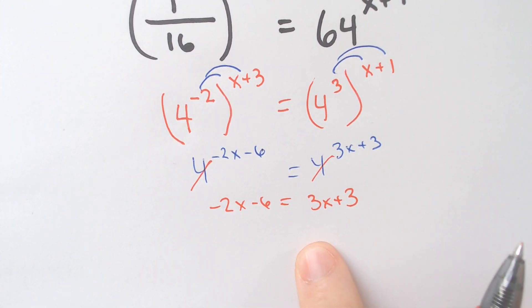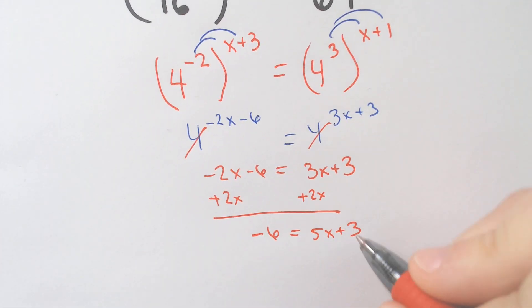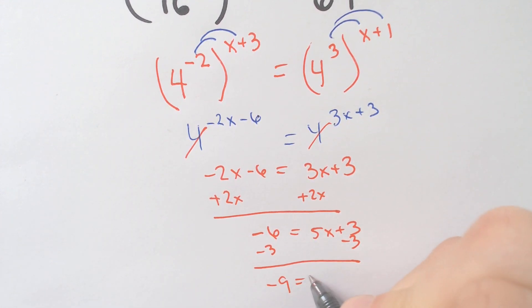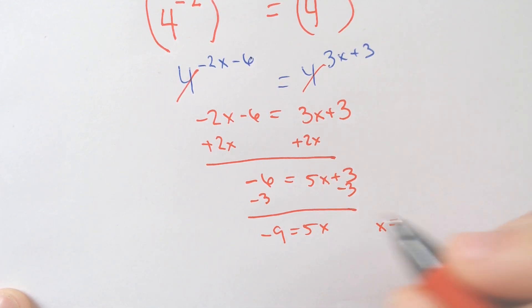I would add 2x rather than subtracting 3 because I like to keep the x as positive. Negative 6 is equal to 5x plus 3. Subtract 3. Negative 9 is equal to 5x. Which means that x would equal, we divide by 5, negative 9 over 5.